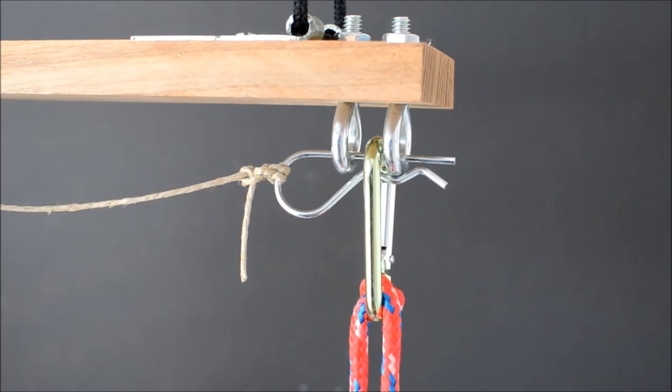Two rings are mounted side-by-side somewhere on the scenery. A ring on the prop goes between those two rings. A pin goes through all three rings to hold the prop up. When the pin is pulled,